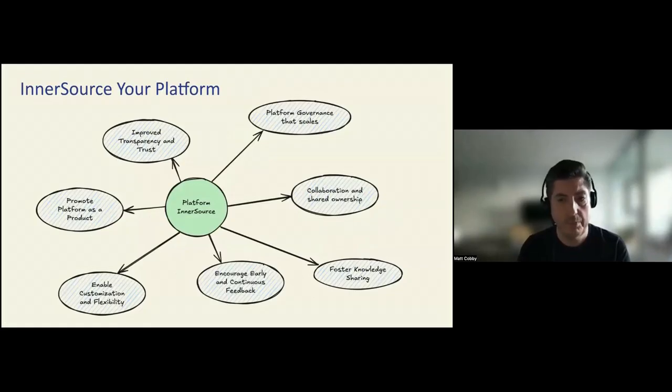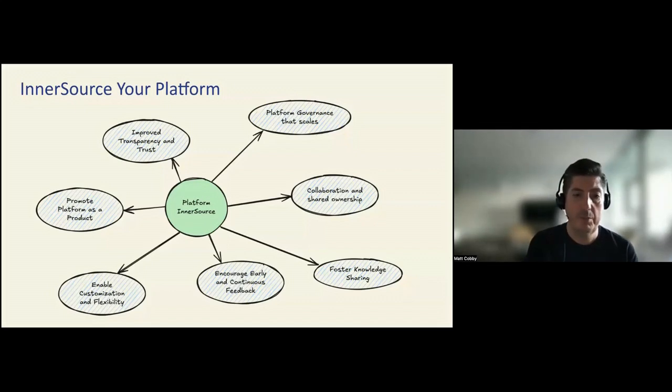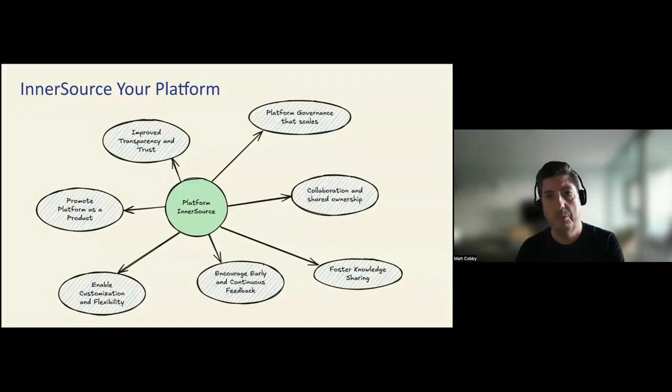Collaboration is the key thing. And shared ownership about how that works. Building knowledge sharing across a different platform and how it works. Having that early and continuous feedback for the platform teams about features that they're developing, whether they work. Giving the potential for development teams to customize and add some flexibility to that platform. Have to think about it as a product. A key one here is about improving transparency and trust. And also about that platform governance that scales. Governance is sometimes seen as a dirty word. But it actually is how do we do things well and do it so that we make sure that we don't break the thing that we're using.